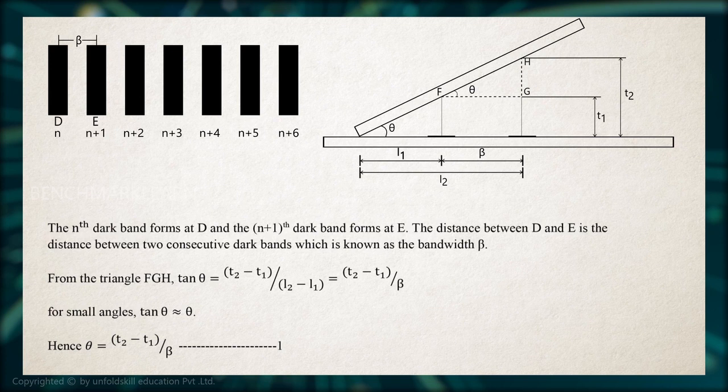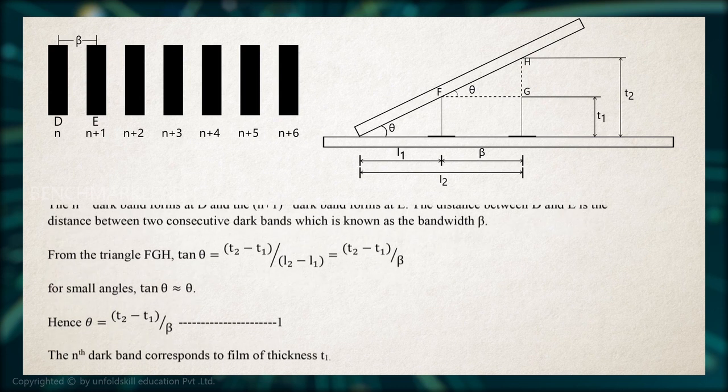From the triangle FGH, tan theta equal to T2 minus T1 divided by L2 minus L1. That is equal to T2 minus T1 divided by beta. For small angles, tan theta is approximately equal to theta and hence theta equal to T2 minus T1 divided by beta.